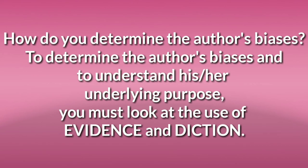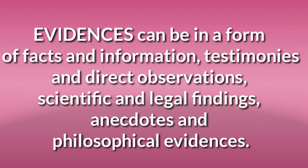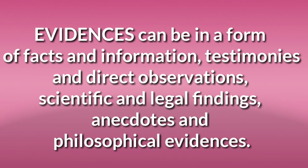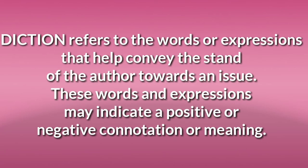How do you determine the author's biases? To determine the author's biases and to understand his or her underlying purpose, you must look at the use of evidence and diction. Evidence can be in the form of facts and information, testimonies and direct observations, scientific and legal findings, and anecdotes and philosophical evidence. Diction refers to the words or expressions that help convey the stand of the author towards an issue.